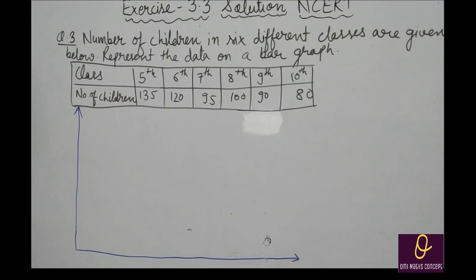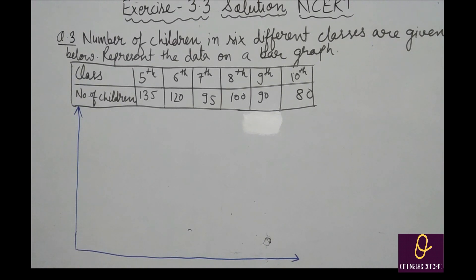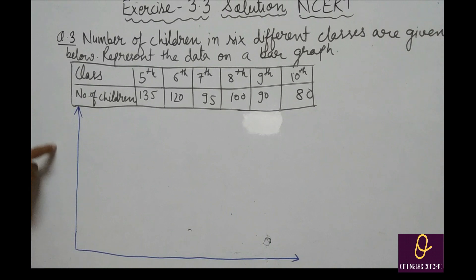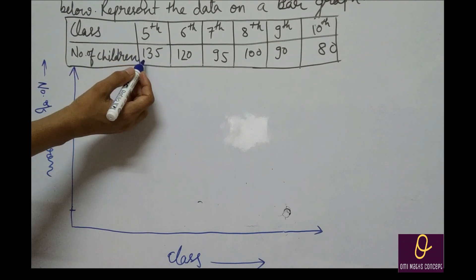Now next question: number of children in 6 different classes are given below, represent the data on a bar graph. Number of children and class given हैं, आपको एक bar graph draw करना है. Along x-axis we will take class, and along y-axis we will take number of children. अब आपको देखना है कि scale कैसे लेंगे. यहाँ पर है 135, 120, 95, 190, 80.